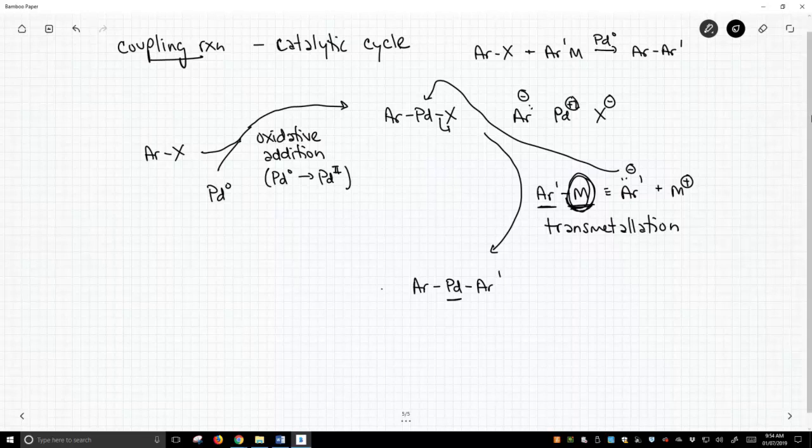Now in this last step, what happens is palladium sitting between these two aromatic rings is not very stable, so it slips out from between the rings. We reform our palladium zero catalyst, which we need to re-enter the cycle and go back around, and as the palladium slips out, it connects the two aromatic rings with a sigma bond.